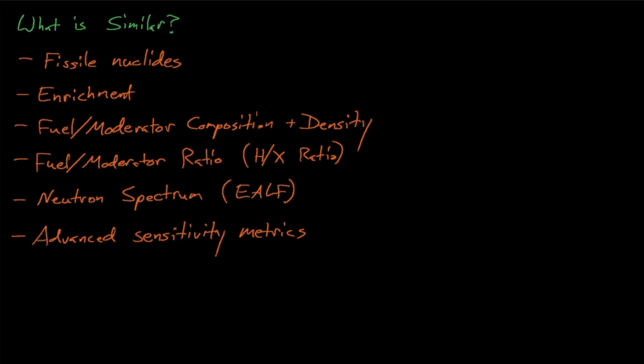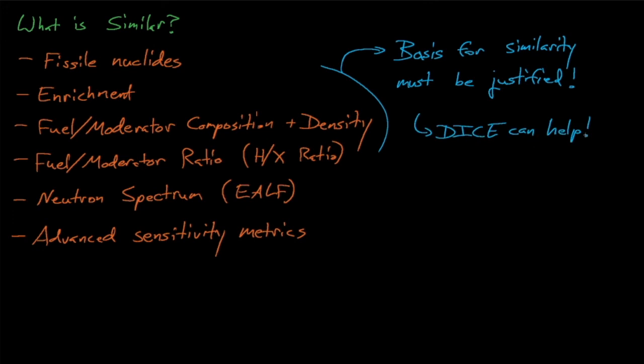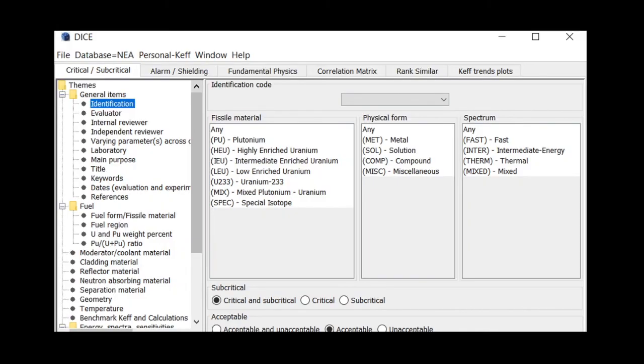Until we dive into the sensitivity-based similarity metrics, it's worth noting that the DICE code, which is the database for the International Criticality Safety Benchmark Evaluation project, can help us identify similar benchmark cases. DICE allows us to easily search and sort through the 4,000-plus ICSBEP cases and to filter cases for things such as fissile nuclides, their neutron spectra, their degree of moderation, and many other parameters. DICE can be a very helpful tool for identifying benchmark cases that share similar characteristics with a target application.